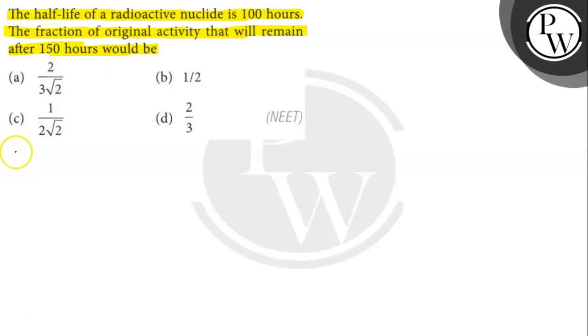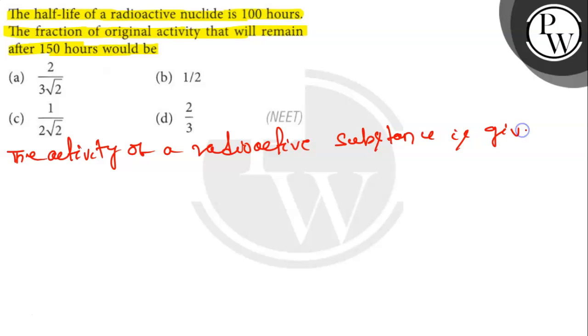Let's find out. The activity of a radioactive substance is given as A equals A₀ into 1 by 2 to the power t divided by t half.